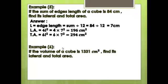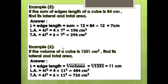Example 6: The volume of a cube is 1331 cm³. Find its lateral and total area. First, find the edge length: L = cube root of 1331 = 11 cm. Lateral area = 4L² = 4 × 11² = 484 cm². Total area = 6L² = 6 × 11² = 726 cm².